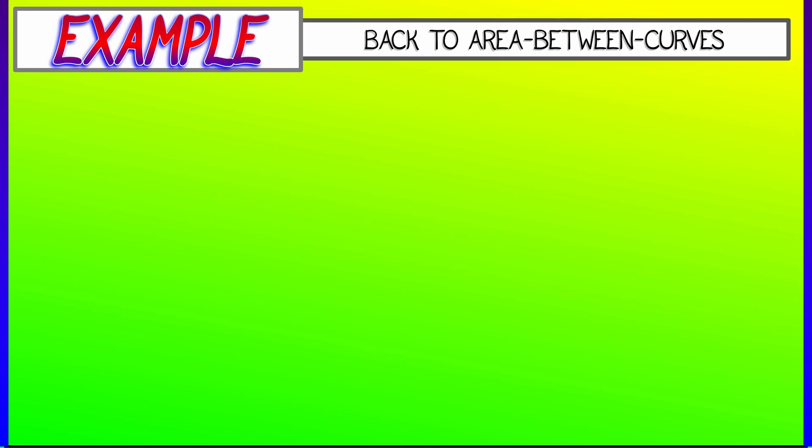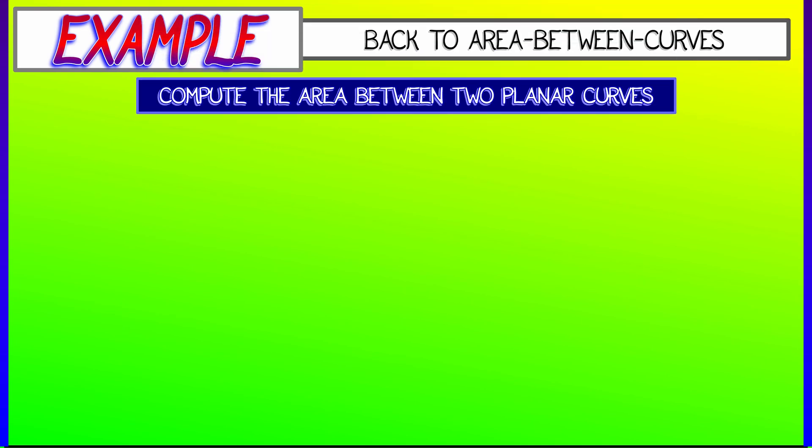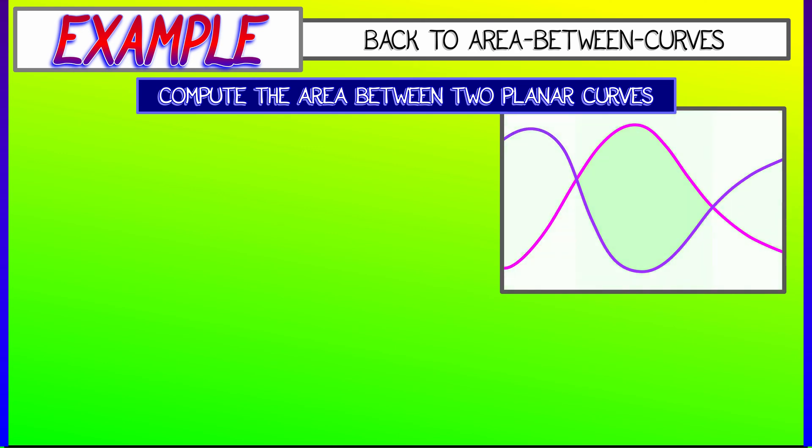Let's go back to single variable calculus. Let's compute the area between the graphs of two curves in the plane. Let's say y equals f of x and y equals g of x as x goes from a to b. Do you remember that formula?